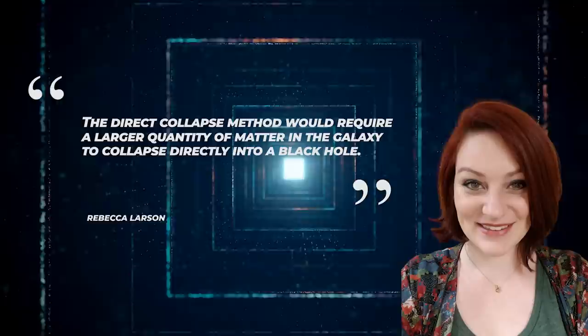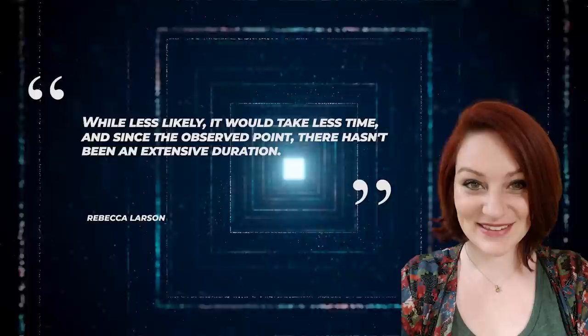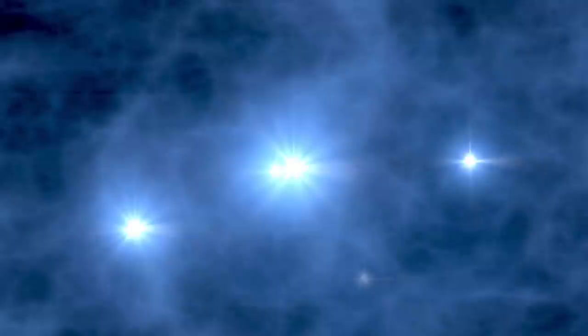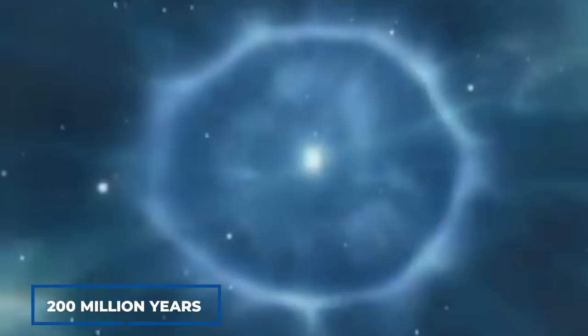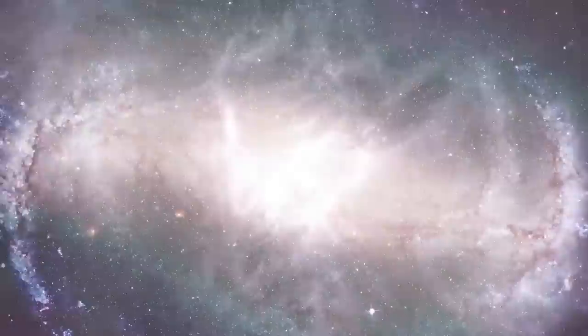Larson elaborated, stating the direct collapse method would require a larger quantity of matter in the galaxy to collapse directly into a black hole. While less likely, it would take less time, and since the observed point, there hasn't been an extensive duration. Alternatively, a Population III star, a type of hypothetical star composed solely of hydrogen and helium, could have exploded around 200 million years after the Big Bang, leaving behind a black hole. This explosive event would have rapidly generated a substantial amount of material, causing it to expand to the size observed by researchers.